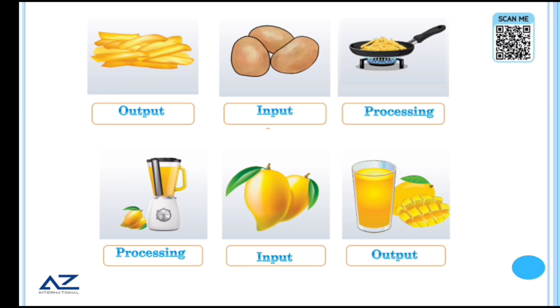Next, you have put it in the raw potatoes, it is in the input, processing means it is fried, the output has become fries. Input is you have put it in the mangoes, you have put it in blender, the output is you have mango juice ready.